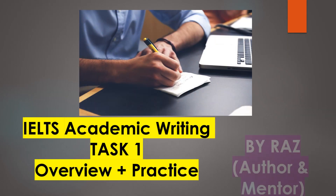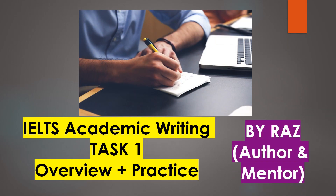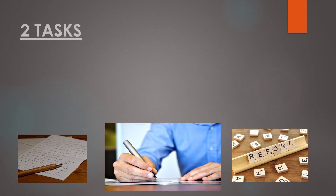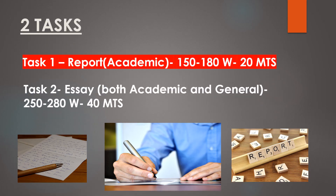Hi folks, I'm Raz and in today's video I'm going to share with you our academic writing task 1 overview and practice. Let's take a look at the two tasks. The first is the task 1 report writing for academic, 150 to 180 words, 20 minutes, and the task 2 is essay writing, both academic and general, 250 to 280 words in 40 minutes. In this video I'm going to talk about the task 1 report writing for academic.